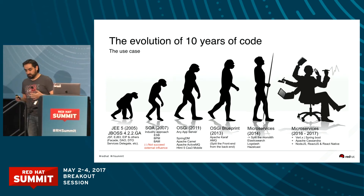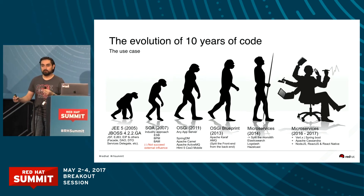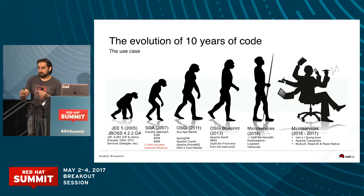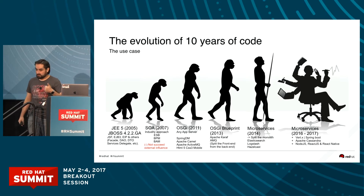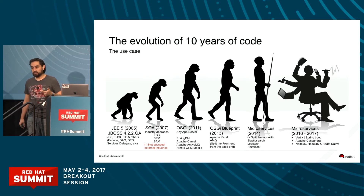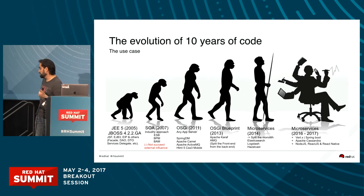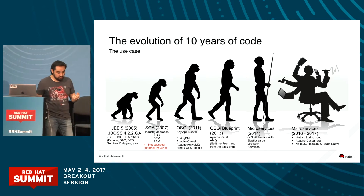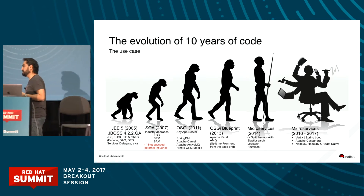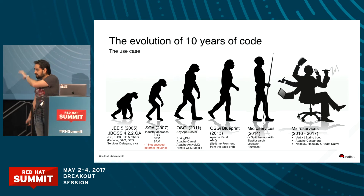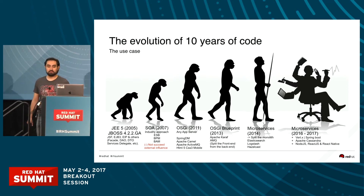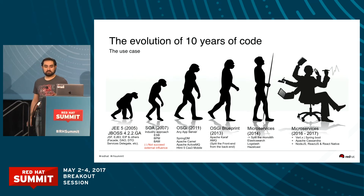We started to stop using Karaf and started waking up new services. Vert.x is a great open source project for doing microservices. We started to experiment with Spring Boot — I really like Vert.x more. And we started to use several new modules with Apache Cassandra. For the front end, we started moving to Node.js, React.js, and React Native.